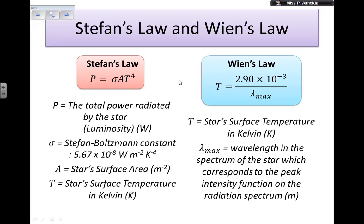A is the star's surface area in meters squared. And finally, T is that star's surface temperature in kelvins.